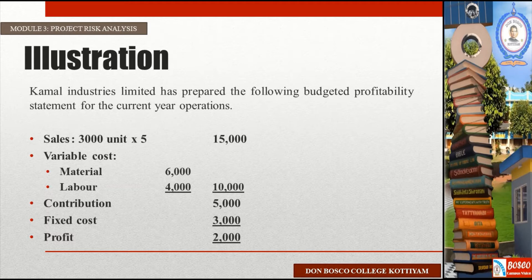Sales: 3,000 units at ₹5 each = ₹15,000. Variable cost: material cost ₹6,000, labor cost ₹4,000 — total variable cost ₹10,000. Sales minus variable cost gives a contribution of ₹5,000. Fixed cost is ₹3,000. Contribution minus fixed cost gives the profit. This is the company's profitability statement.